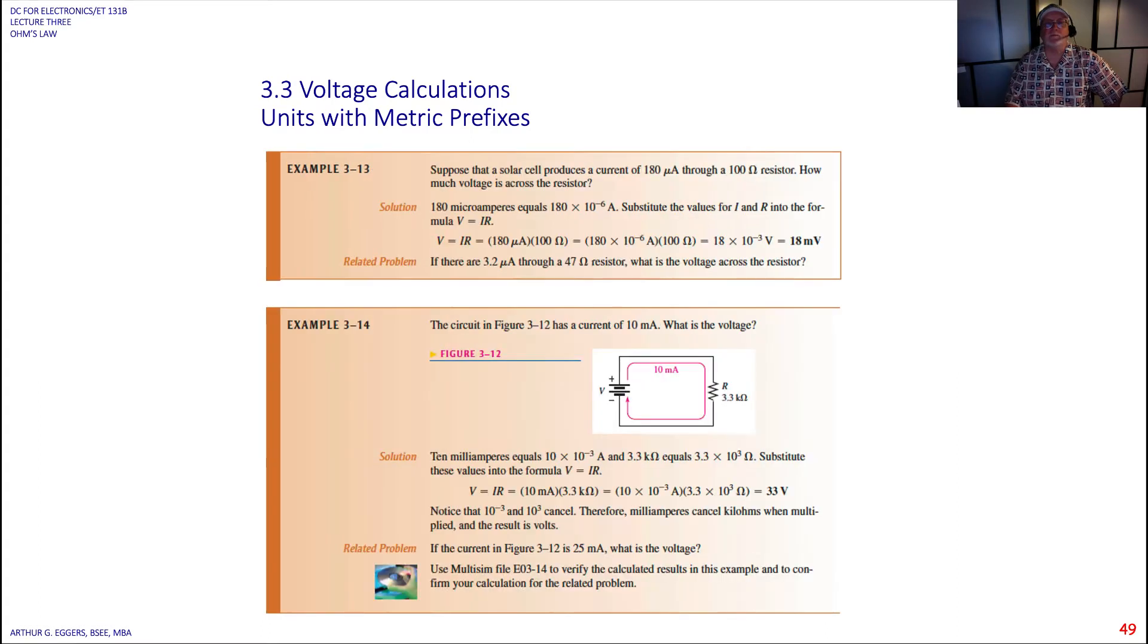You work the related problem. Suppose that a solar cell produces 180 microamps through a 100 ohm resistor. How much voltage is across the resistor?